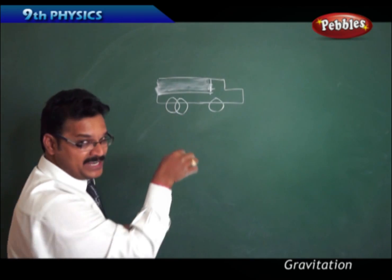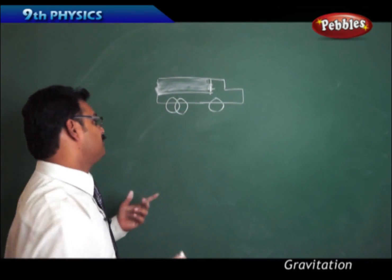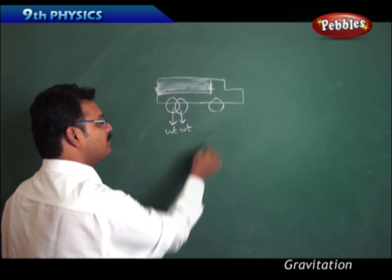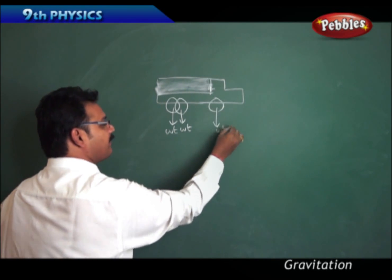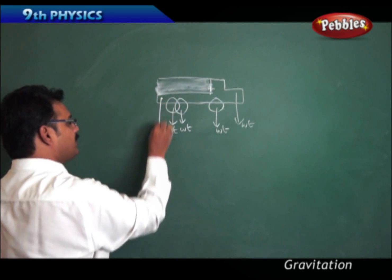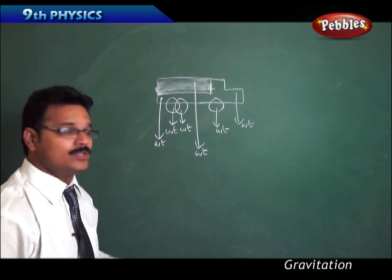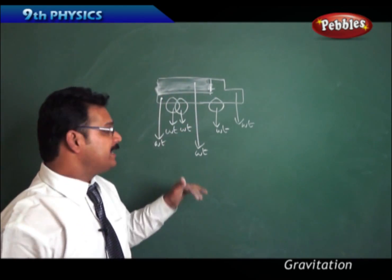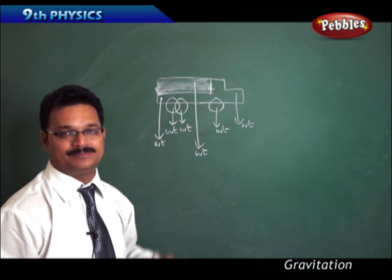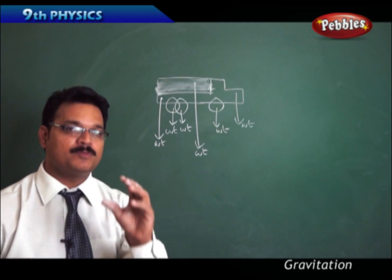If we ask in which direction the weight of the wheels is acting — the wheels' weight acts towards the ground, the front part acts towards the ground, the back part acts towards the ground, and the material acts towards the ground. So each and every part's weight always acts towards the ground. But here you have so many weights acting towards the ground, so to make it simple, what physics people have done is...